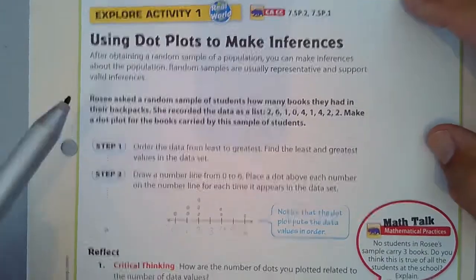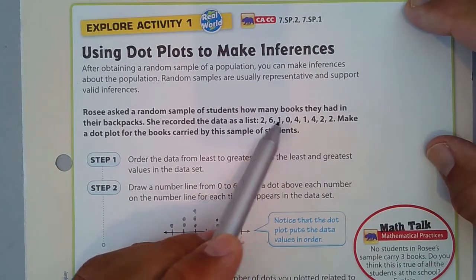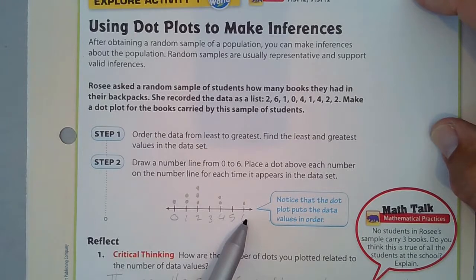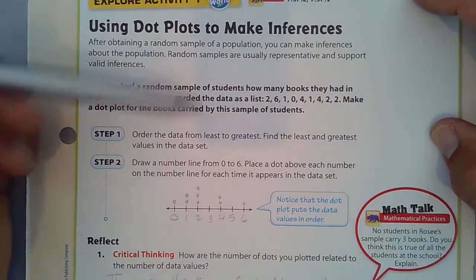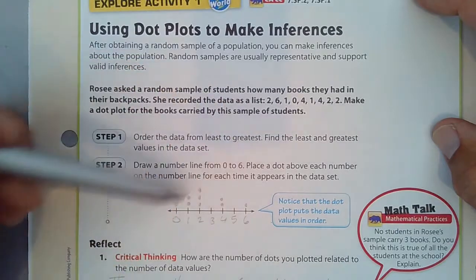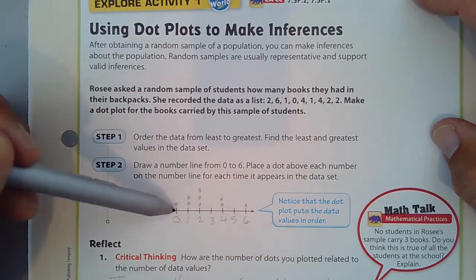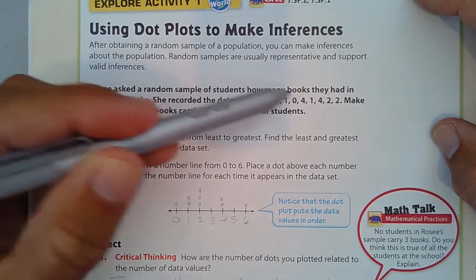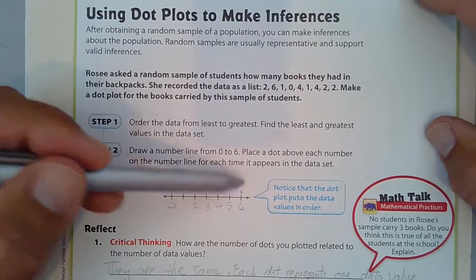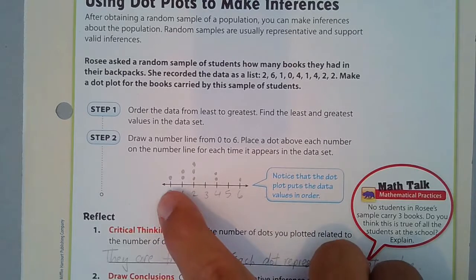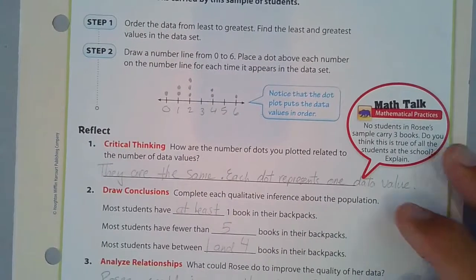We're going to order the data from least to greatest. We see that the smallest number is zero, and the biggest number is six, so we go zero to six. We place a dot above each number on the number line each time it appears in the data set. Two happens three times. Zero happens once. One happens two times. Four happens twice. And six happens once. We should notice that the dot plot puts the data values in order, so it organizes them as well.